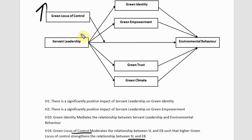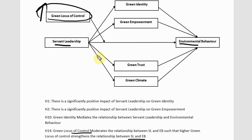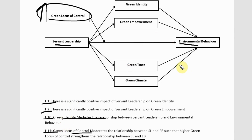If you've got higher locus of control, the relationship between servant leadership and environmental behavior gains strength — it is further strengthened in the presence of higher green locus of control. So this is how you write your direct hypothesis, your mediating or mediation hypothesis, and your moderation hypothesis. I hope this session would have helped you understand how to propose your hypotheses for a research paper or thesis.